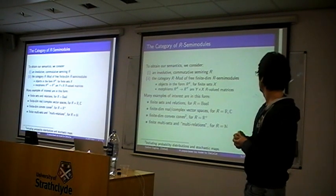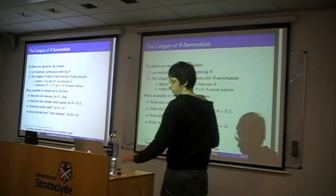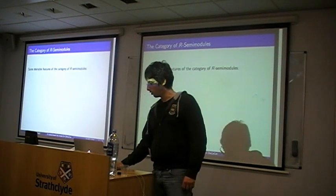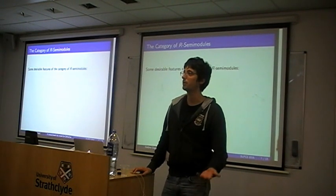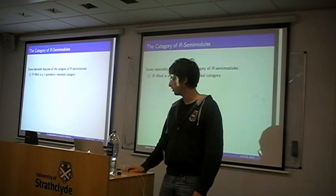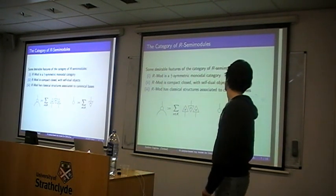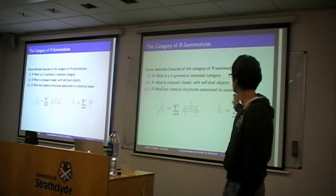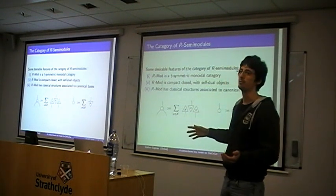For doing this sort of semantics, one needs Dagger compact categories. All the categories of semi-modules are Dagger symmetric monoidal and they are compact-closed, they have self-dual objects and they have classical structures — written in the usual way as multiplication, unit, comultiplication, and counit. Feel free to read them top to bottom or bottom to top; the picture at the end will be bottom to top.